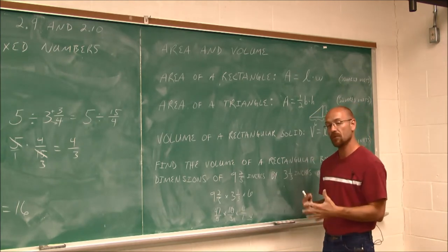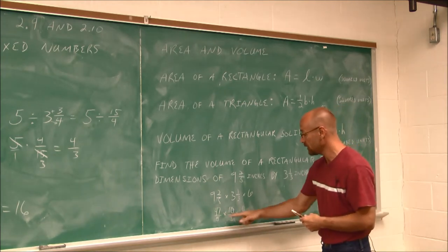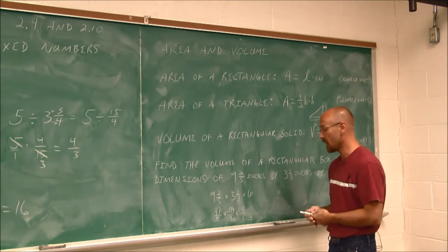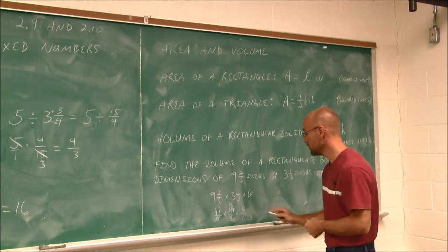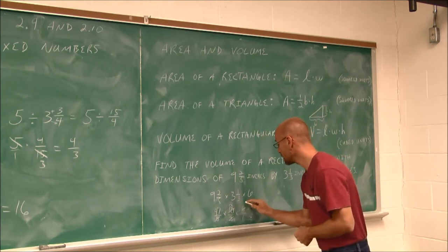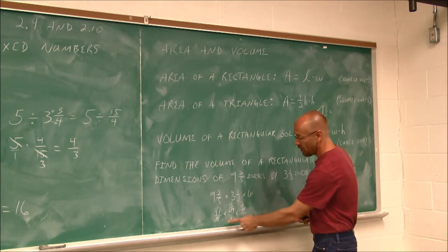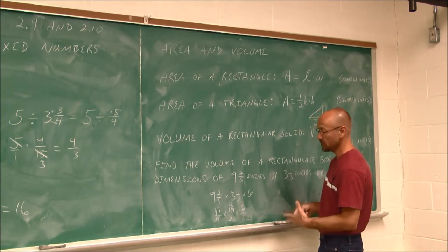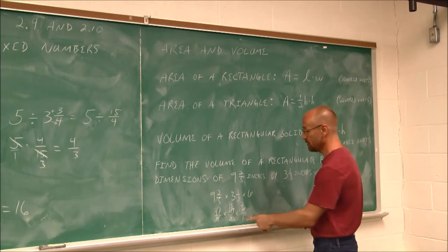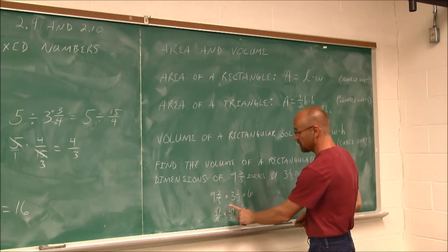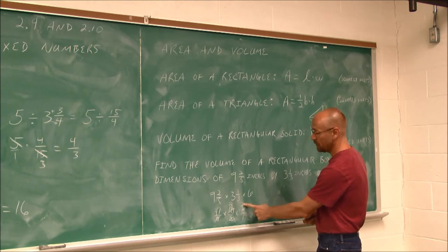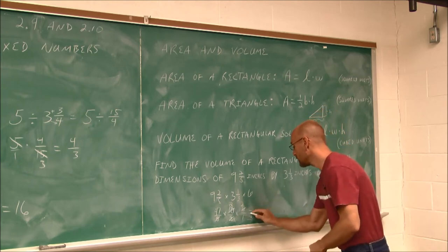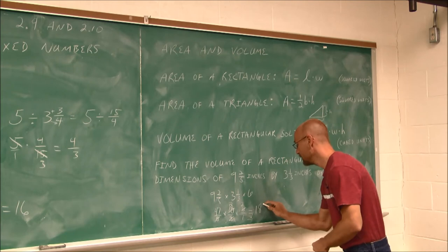But before I do, I'm going to reduce. Because it's all multiplication and division, I can reduce common factors. So I say the 5 and the 10 can reduce. The 3 and the 6 can reduce. And now all of my denominators are 1. So that makes life a little easier. So I'm going to say 47 times 2 is going to be 94. 94 times 2 is 188.